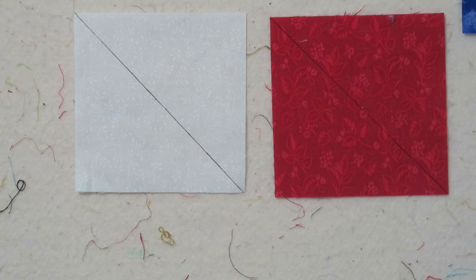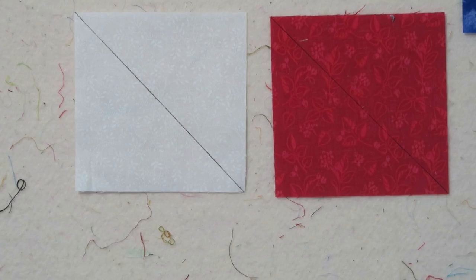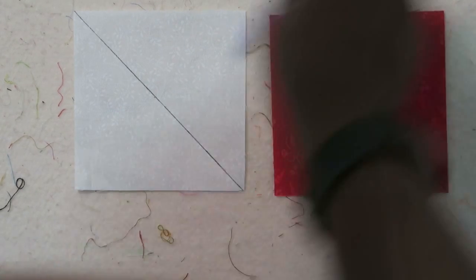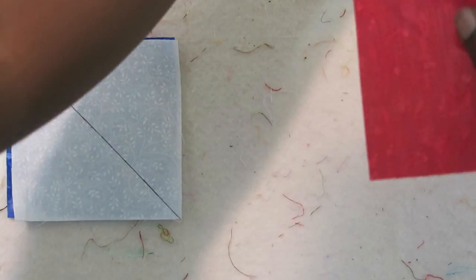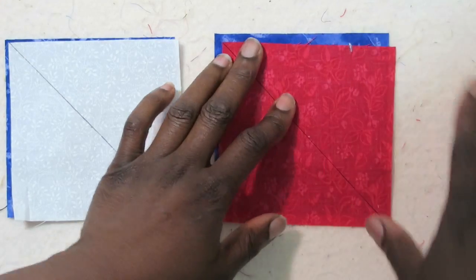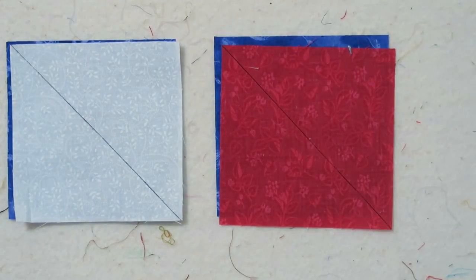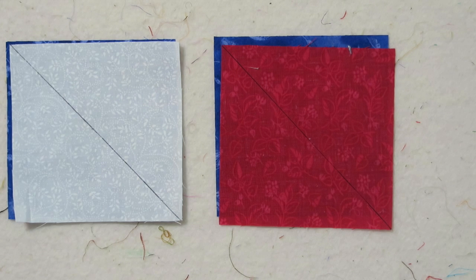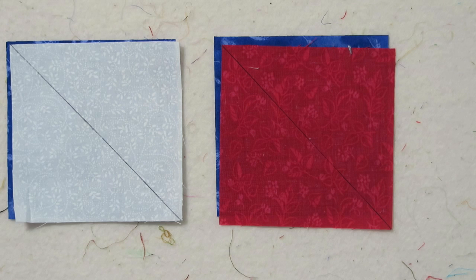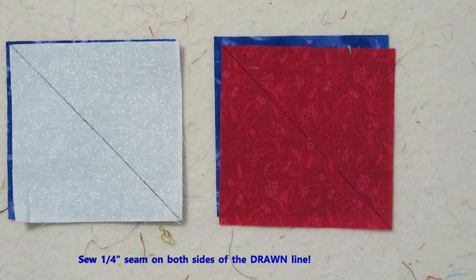The next step is to take our 4 and a half inch squares from the red and the white, and draw a line diagonally through the center. Then you're going to match those up with your 4 and a half inch squares, right sides together, and you're going to sew on both sides of the sewn line. So I will do that and come back with my next step.